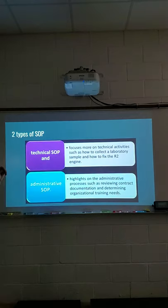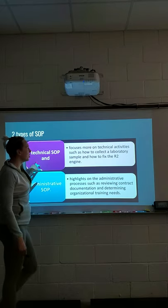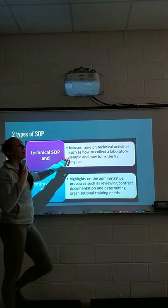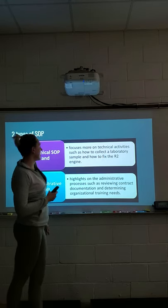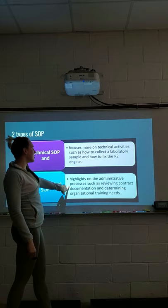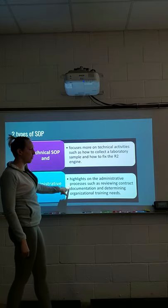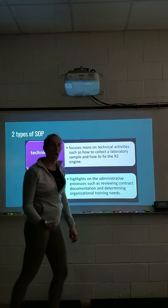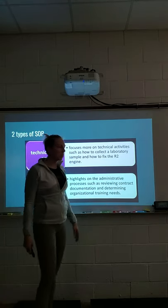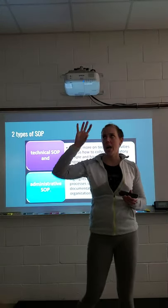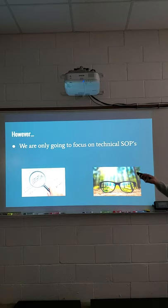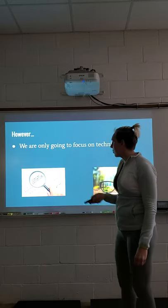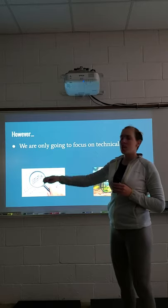There are two types of SOPs. A technical SOP covers how to do something — technical activities like how to collect a stool sample, how to run a fecal float, how to clean something, or how to fix an engine. Administrative SOPs are more for highlights on an administrative process — like how to review a contract or how to determine organizational training needs. Those are more like directions at an admin level versus a technical level. For our portion, we're only going to focus on technical SOPs.